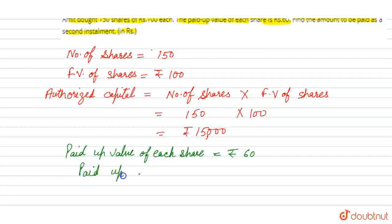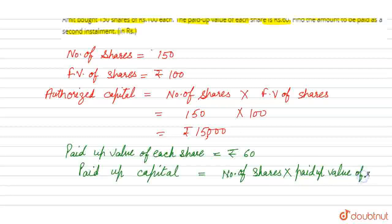Now paid up capital is equal to number of shares multiply by paid up value of each share. The paid up value of each share, if we multiply these, we'll get 150 multiplied by 60.